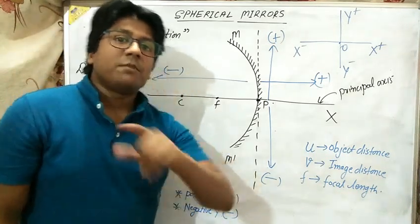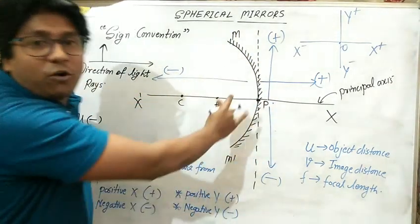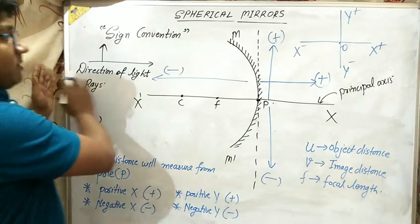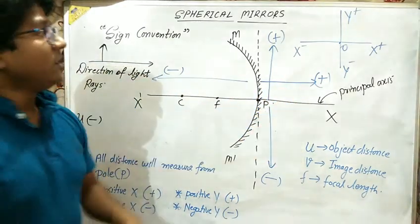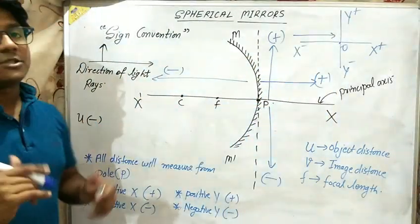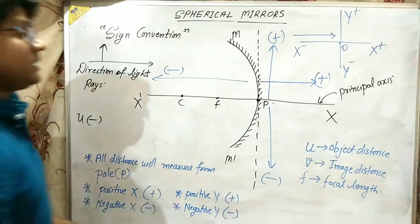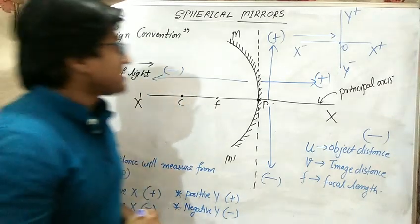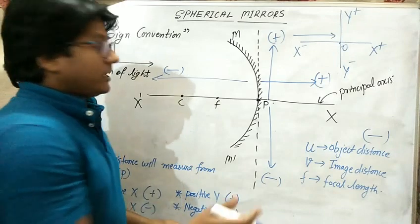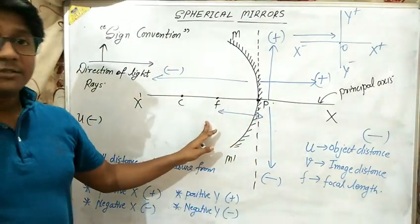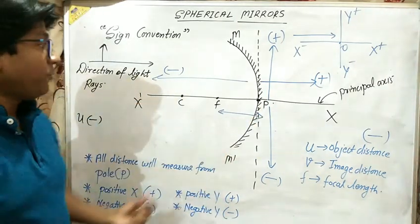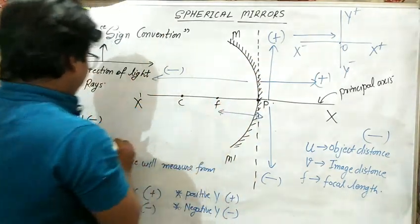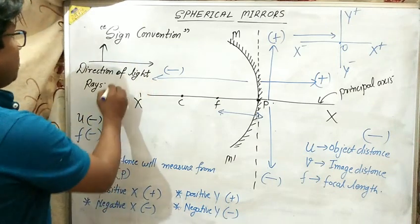Heights above the principal axis are positive; heights below are negative. In each case the object must be placed to the left side of the mirror — whether it is a concave or convex mirror. Light coming from the left side is taken as the negative direction. So in each case, for concave or convex mirror, the distance of the object from the pole is taken as negative.